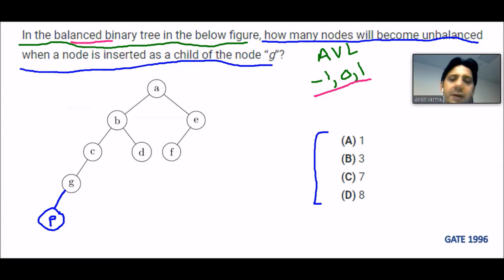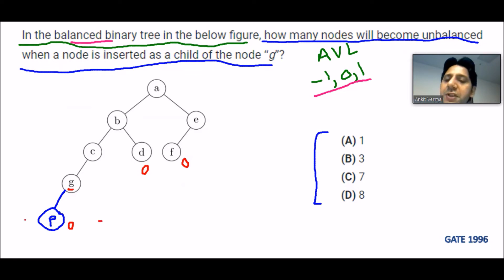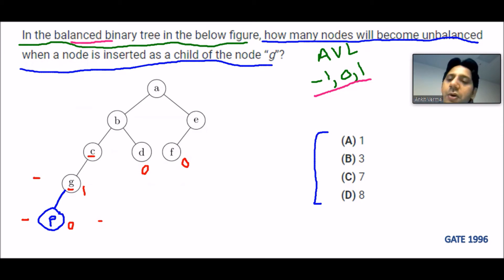Now with the new tree after inserting P, all leaf nodes are again at zero. Working bottom to up: for node G, there is nothing on the right hand side and only node P on the left hand side — one level — so 1 minus 0 is 1, giving G a balancing factor of 1. For node C: there are two levels on the left hand side (P and G) and nothing on the right, so 2 minus 0 is 2.